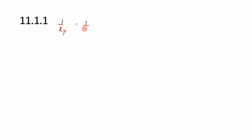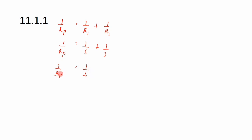For the resistors connected in parallel: 1/Rp = 1/R1 + 1/R2, so 1/Rp = 1/6 + 1/3. Calculating this gives 1/Rp = 1/2. Since we are looking for Rp and not 1/Rp, we invert this — making the denominator the numerator and vice versa — so Rp equals 2 ohms.